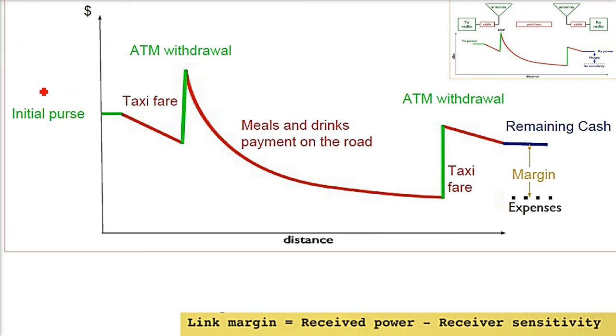Let us understand this with an example. Link margin has to be understood like this. You have $500. All these reds are losses, all the greens are your gains. You have $500, then you want to travel somewhere. You gave something for taxi, say $200. How much is left? $300. Now you have the antenna gain—the ATM withdrawal. You've withdrawn money from the ATM, say $1,000. You have $1,300 now.